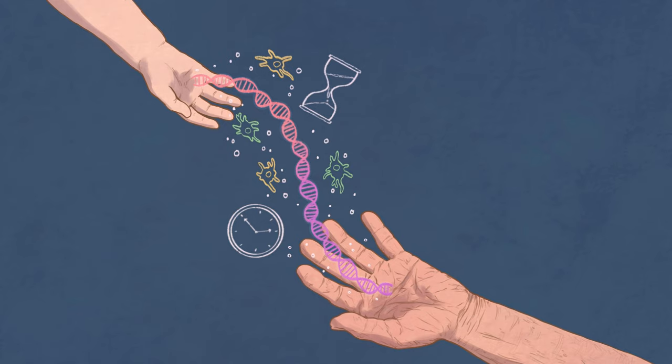One of his recent discoveries is the surprising fact that organs, such as the liver and pancreas, contain cells that are a mosaic of different ages. Dr. Hetzer, welcome to Where Cures Begin. Tell me how you became interested in science to begin with.